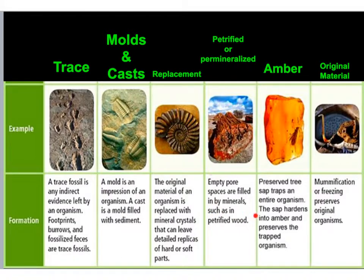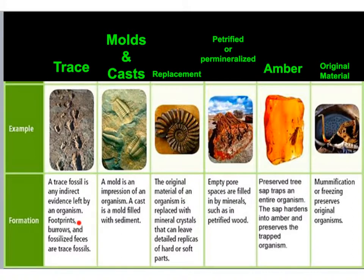Petrified or permineralized — the biggest example here is petrified wood. Scientists think the pores of the tree get filled in with sediment and you end up with petrified wood. Another type of trace fossil, which is kind of cool, is feces. In the lab we'll look at what's called dinosaur coprolite — essentially preserved poop. Again, it's not the organism itself, but something it left behind.